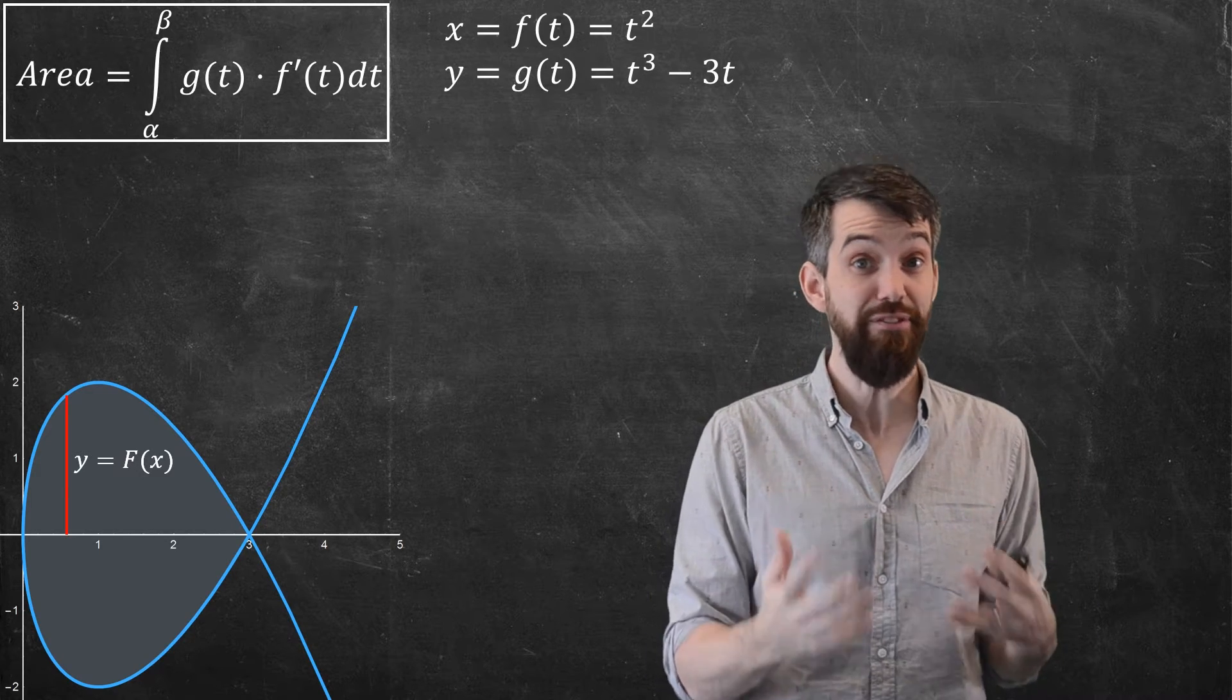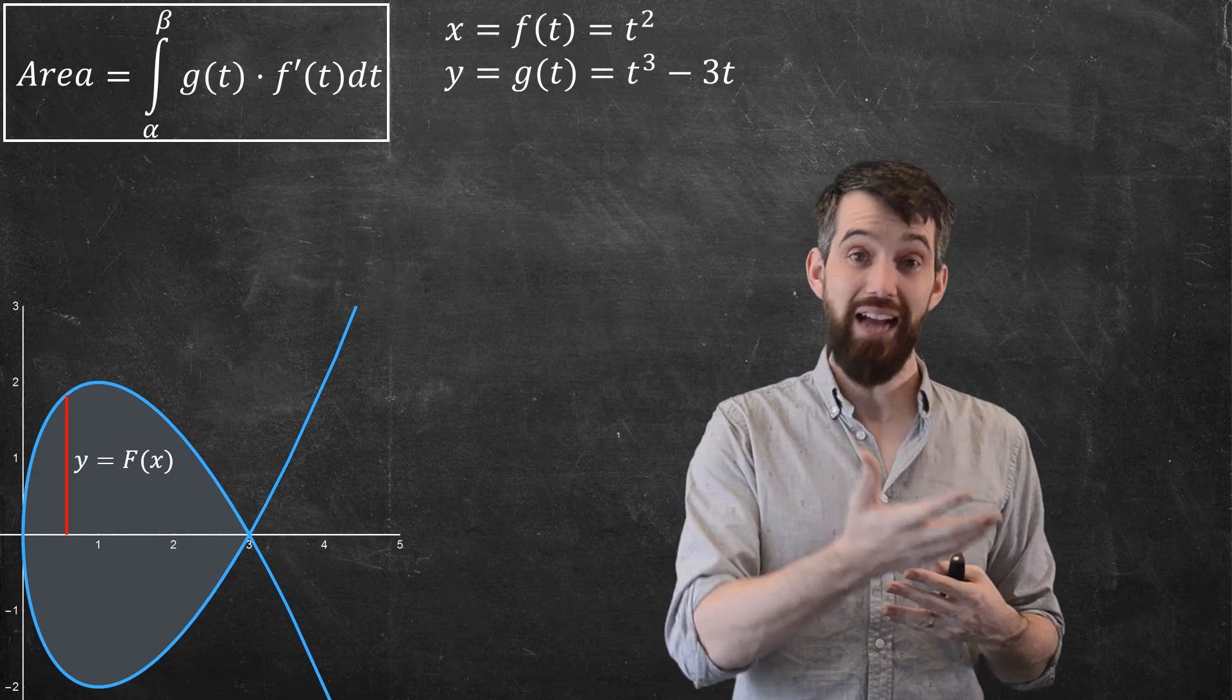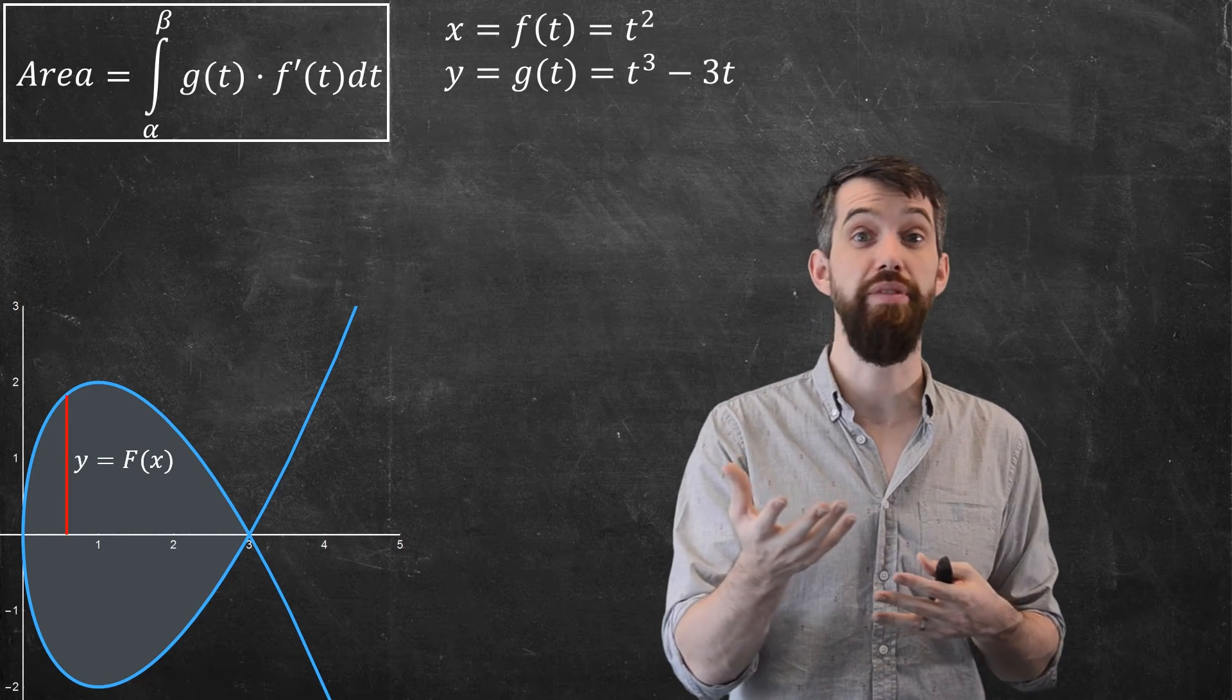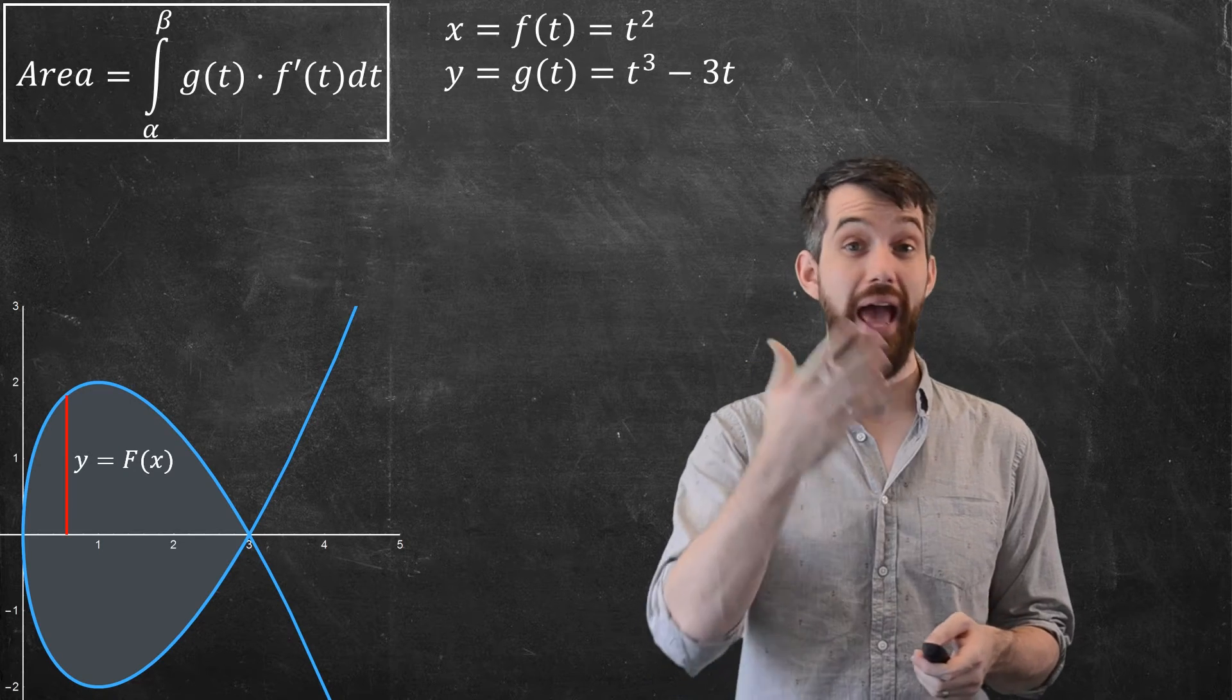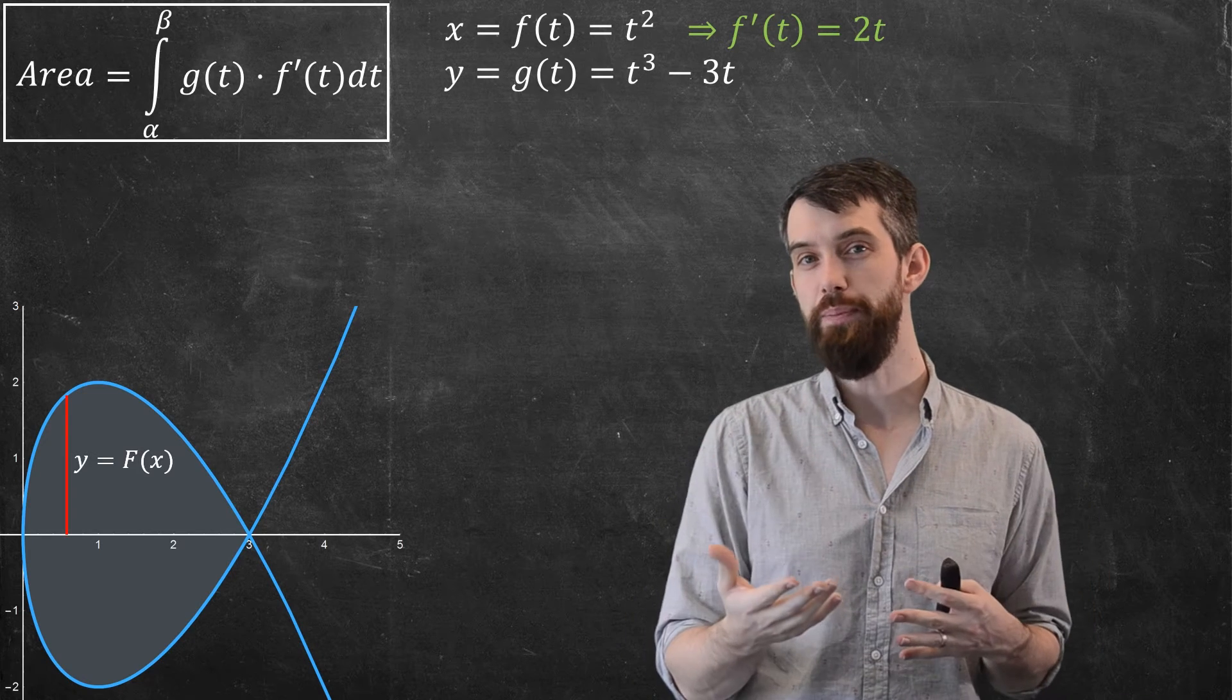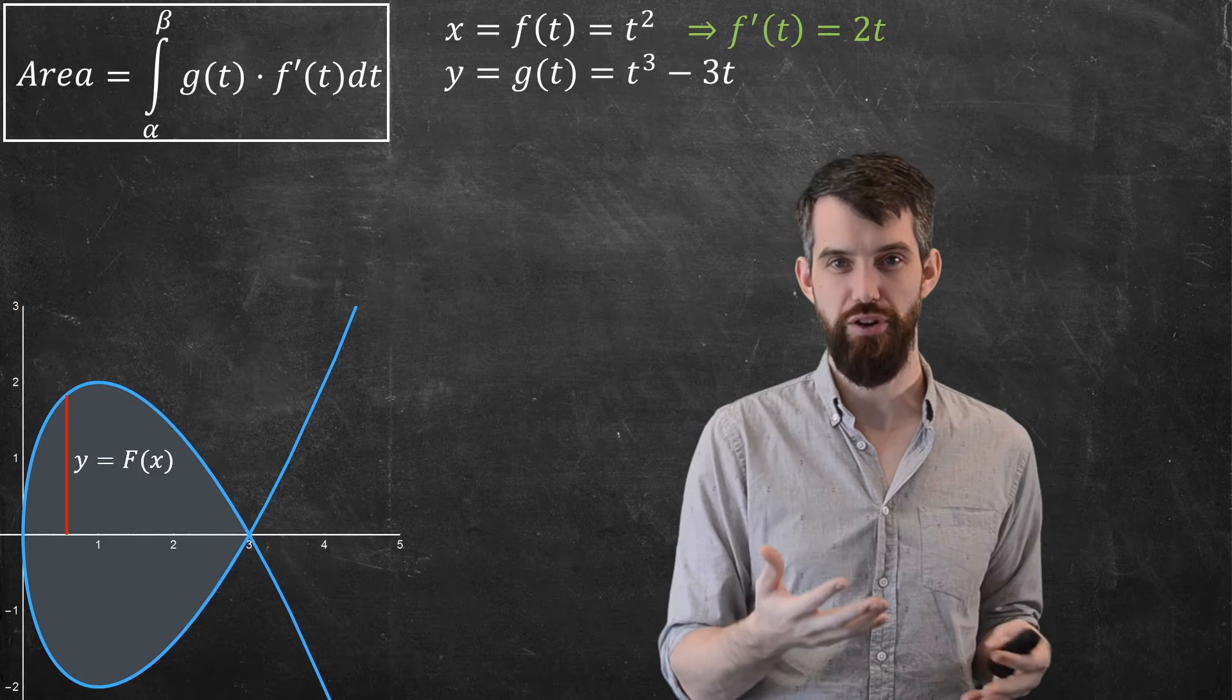Alright, so let's do that for the specific example we've seen before. In this example, the x or the f of t was t squared and the y or the g of t was t cubed minus 3t. I'm going to have to compute f prime so I can go and do that. f prime is 2t. And then I want to figure out the endpoints for my integration.